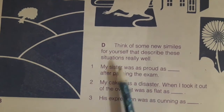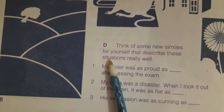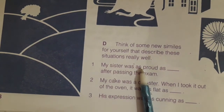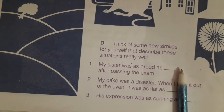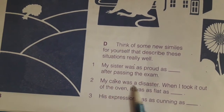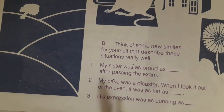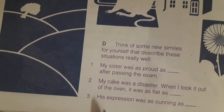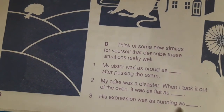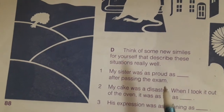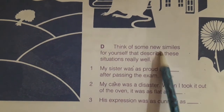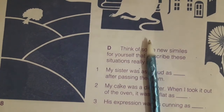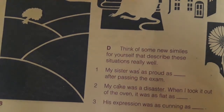Next exercise: think of some new similes that describe these situations. My sister was as proud as a peacock. My cake was a disaster — when I took it out of the oven it was as flat as a pancake. His expression was as cunning as a fox. Students, do this exercise carefully in your English book. This is also your homework — take care.